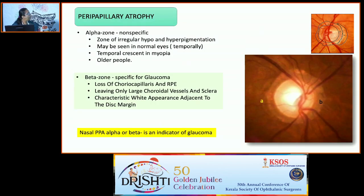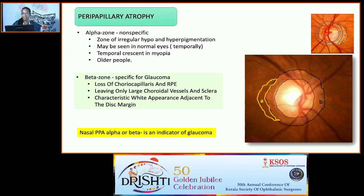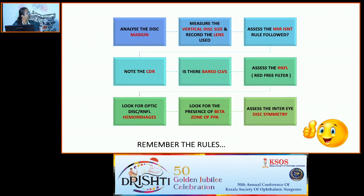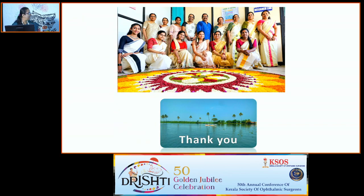Peripapillary atrophy is important. The alpha zone shows irregular hypo- and hyperpigmentation, possibly seen in normal eyes including temporal crescents in myopia. The beta zone is specific for glaucoma, showing loss of choriocapillaris and RPE leaving only large choroidal vessels and sclera. Beta zone on the nasal side of the disc is a strong indicator. Take-home messages: analyze disc margin, measure vertical disc size, assess NRR not just CDR, look for vessel signs of an increased cup, check for disc and RNFL hemorrhages, peripapillary atrophy, and compare both eyes for symmetry.